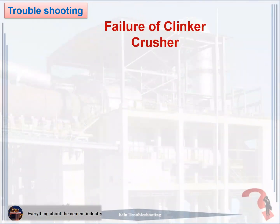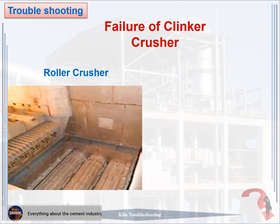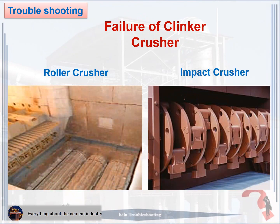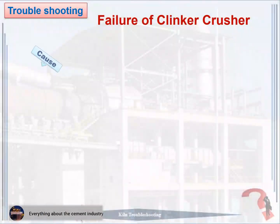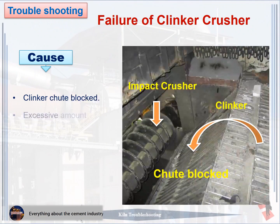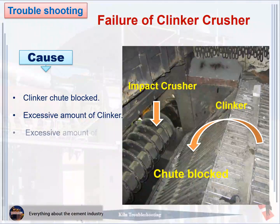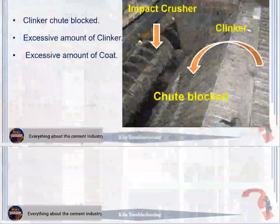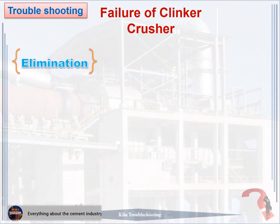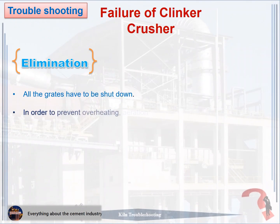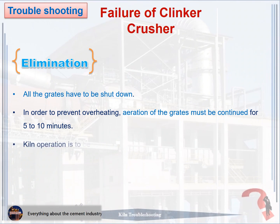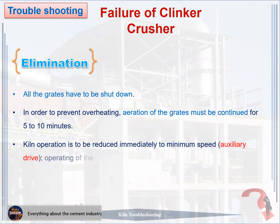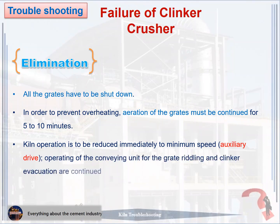Problem 6: Failure of clinker crusher. The causes: one, clinker shoot blocked; two, excessive amount of clinker; three, excessive amount of coat. How to eliminate: one, all grates have to be shut down. Two, in order to prevent overheating, aeration of the grates must be continued for 5 to 10 minutes. Three, kiln operation is to be reduced immediately to minimum speed on auxiliary drive. Operation of the conveying unit for the grate riddling and clinker must be continued.